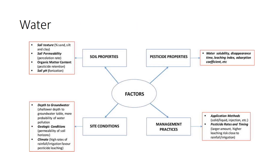Another potential fate of pesticide residues in the environment is movement into water. The potential for movement is greater for pesticides that have a long persistence rate. Other factors include tendency to adsorb to the soil and high water solubility. Persistence is measured by the half-life of the pesticide — the period of time that it takes for half of the pesticide to break down in the environment. The longer the half-life, the greater the possibility for movement of the pesticide before it degrades.